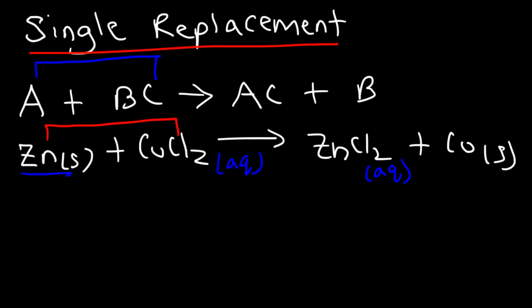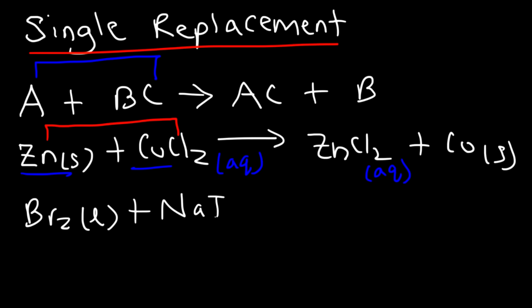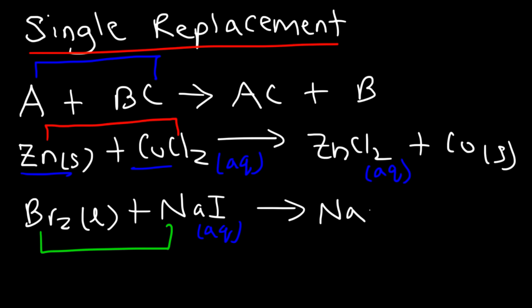Typically, a metal displaces another metal in a solution. Sometimes it can be a non-metal displacing another non-metal. For example, elemental bromine, a liquid in its natural state, reacts with aqueous sodium iodide. Bromine pairs up with sodium, displacing iodide out of solution. You get sodium bromide in solution and elemental iodine out of solution.